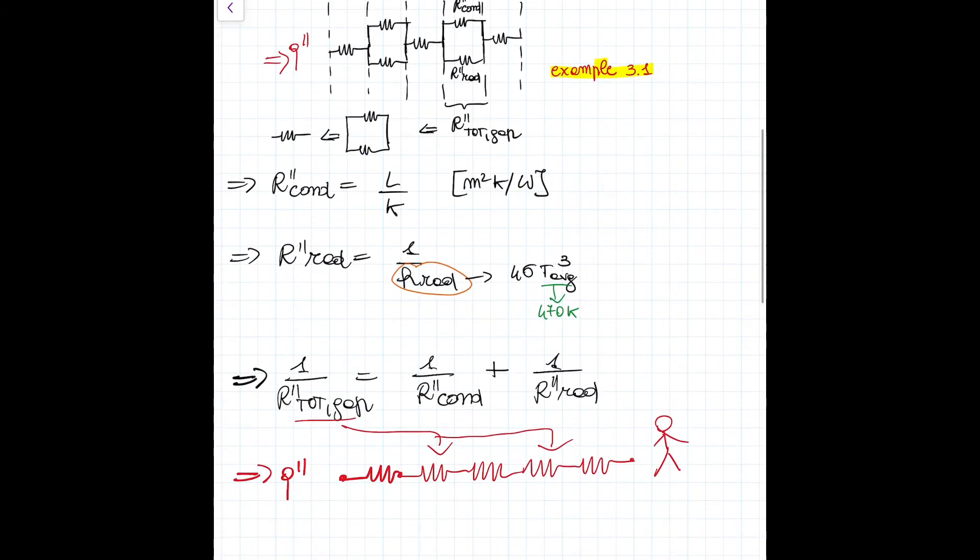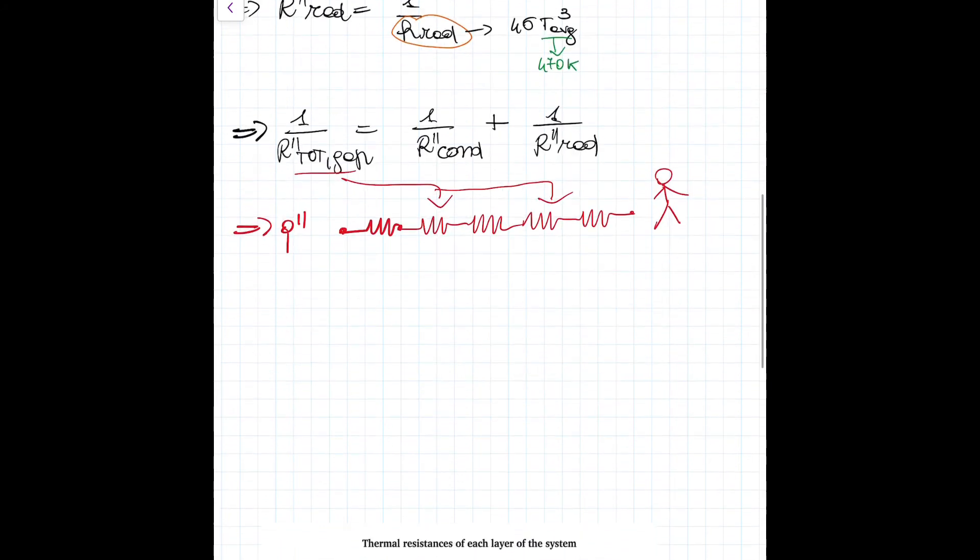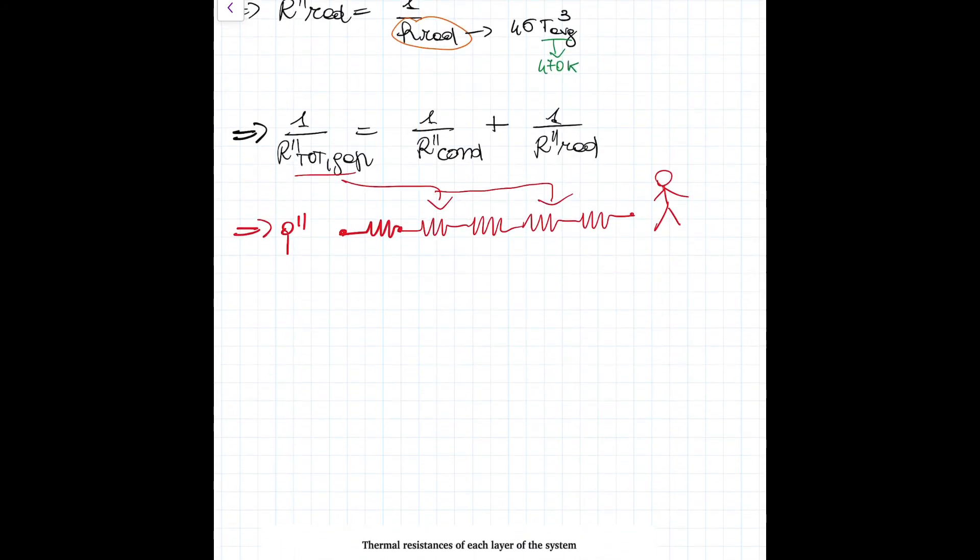We have all the properties of all layers apart from the air gaps. We can extract the conductivity of the air at T_average equal to 470 Kelvin from the INCROPERA textbook and find that K_air is equal to 3.0387 watts over meter Kelvin.